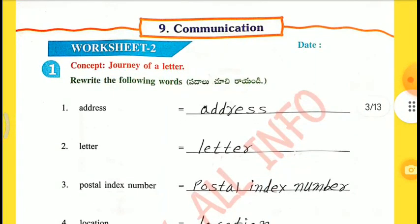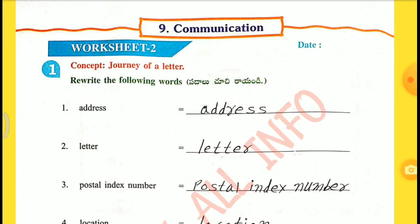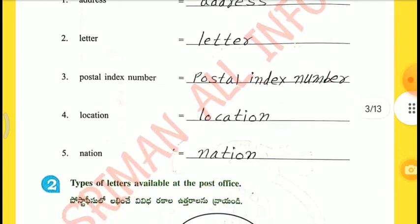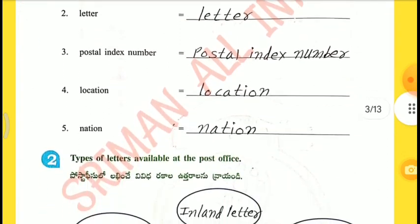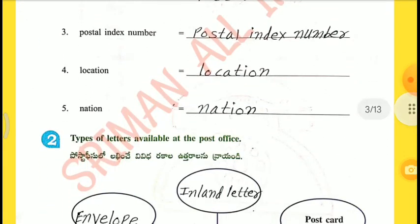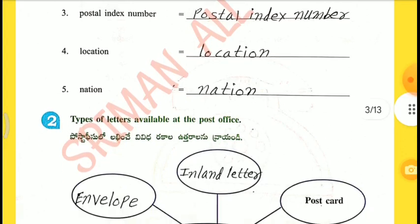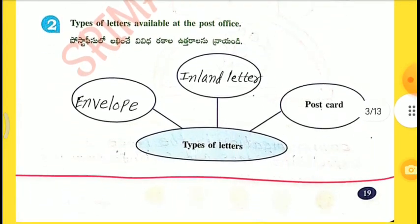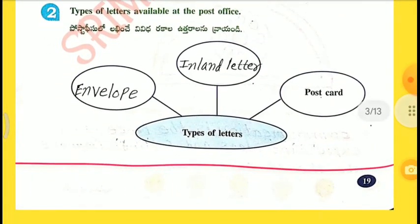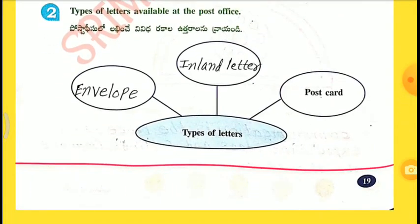Worksheet 2, Concept: Journey of a Letter. Re-read the following words: Address, Letter, Postal Index Number, Location, Nation. 2nd one — Types of letters available at the post office: Envelope, Inland Letter, Postcard.